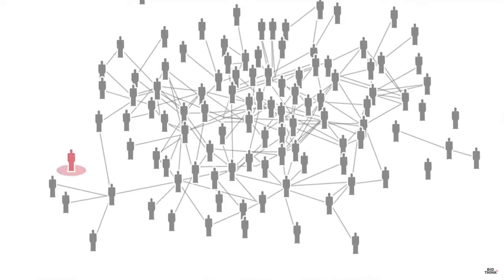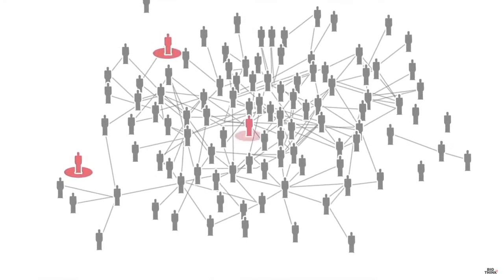Network science lets you understand the world picture between related data points. This is thanks to the structural properties of a graph dataset. With GraphMap, you can use network science and geolocation visualization in order to understand insights on territory.